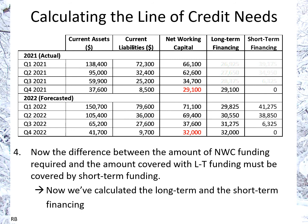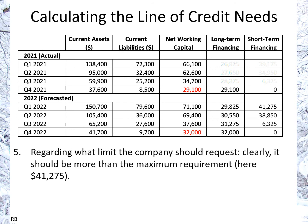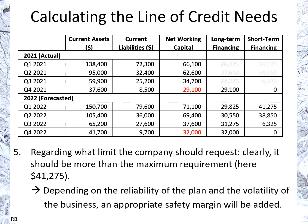We've now calculated both the long-term and short-term financing requirements based on net working capital. For the second question — what limit should be negotiated — anything less than $41,275 would be wrong, as that's the minimum we need. We'd want something higher, depending on how volatile the business is and the appropriate safety margin. Something like $45,000 or closer to $50,000 would be an appropriate limit in this case.